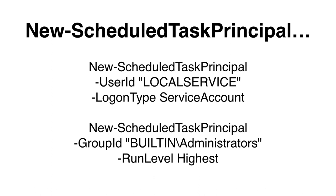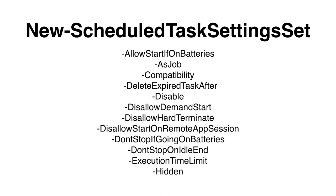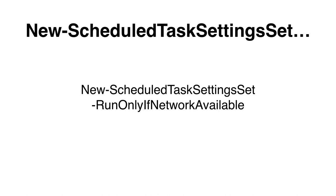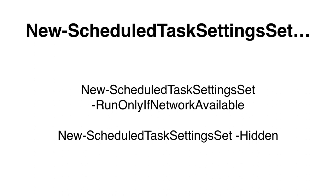This is an example of how to set the task to run as the Administrator group with highest privileges. Another cmdlet we can use is New-ScheduledTaskSettingsSet, which has many options. If you would like to view the list of all the parameters, please pause the video. Here are two examples of how to use this cmdlet: the first shows how to execute the action only when the network is available, and the second shows how to run a hidden task.